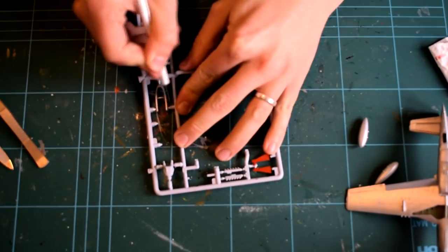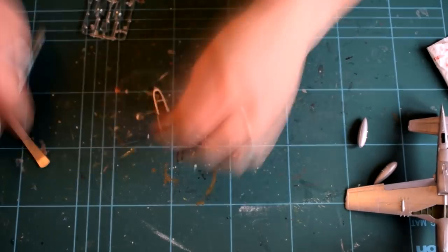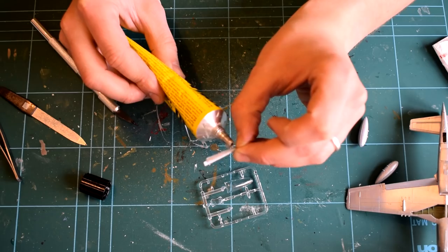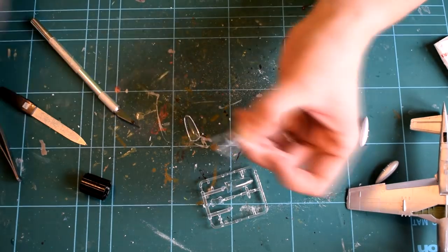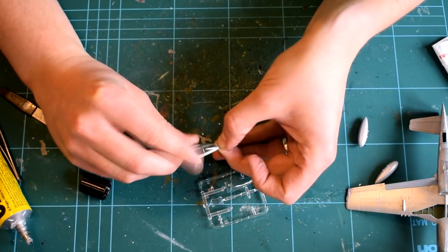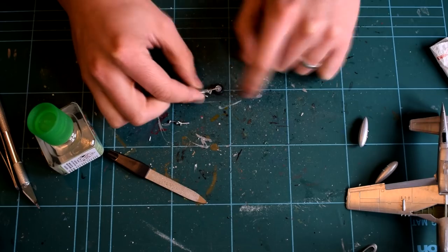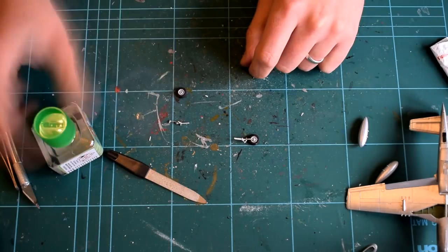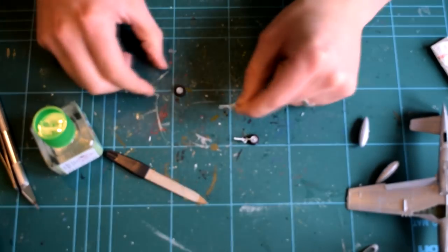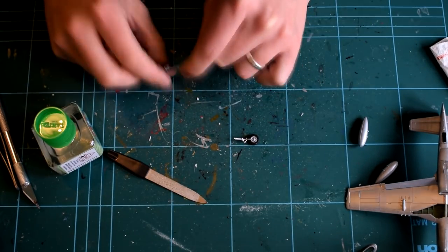The cockpit canopy has a part that needs attaching before it can be applied to the aircraft, so I used a general purpose glue to bond the clear part with the base. I then added the landing gear legs to the wheels, taking care not to spoil the paint finish with the poly cement. This can be quite a fiddly step.